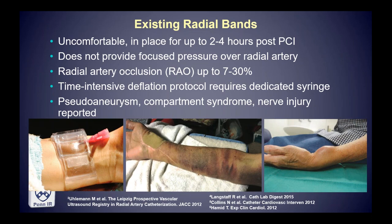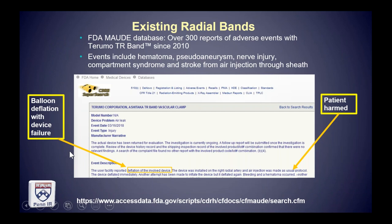When you go to deflate these balloons, if you deflate them quickly they can lead to re-bleeding. So there's a pretty time-and-labor-intensive deflation protocol. It requires a dedicated syringe — if you lose the syringe you have to open another device to get one. There are untoward effects like pseudoaneurysm, compartment syndrome, and nerve injury, not surprising given they're not selective and are compressing the entire wrist. The FDA MAUDE database has a plethora of reported adverse events including hematoma, pseudoaneurysm, nerve injury, compartment syndrome, and even stroke from inadvertent injection of air through the vascular sheath.